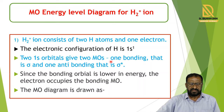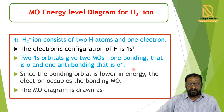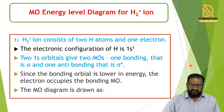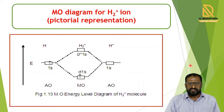Two 1s orbitals of the hydrogen atoms form one bonding orbital, sigma, and one antibonding orbital, sigma star. Since the bonding orbital is lower in energy, the electrons present in the molecular orbital occupy the lower bonding molecular orbital. The molecular orbital diagram for H2 plus Ion can be drawn this way — you see this diagram.